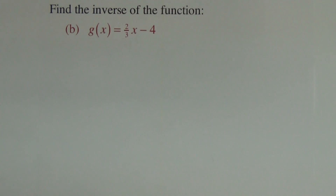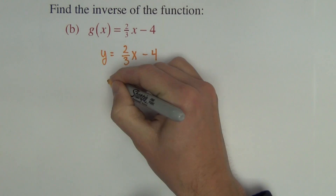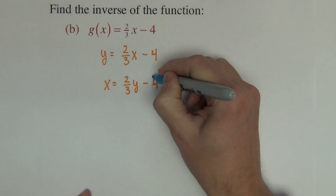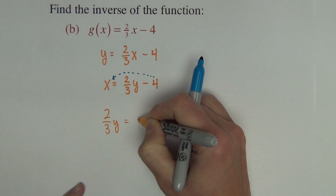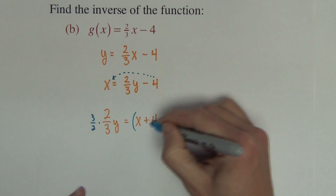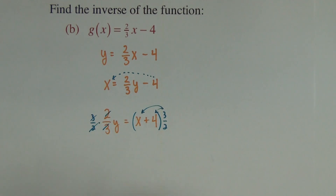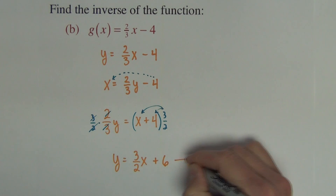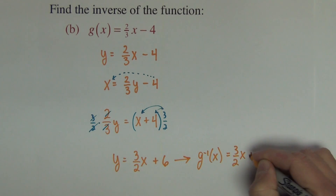Next problem: find the inverse of the function. We rewrite as y equals two-thirds x minus 4, then switch x and y to get x equals two-thirds y minus 4. Solving for y, move the 4 to the other side giving two-thirds y equals x plus 4, then multiply by the reciprocal of the fraction, giving y equals three-halves x plus 6. So g inverse of x equals three-halves x plus 6.